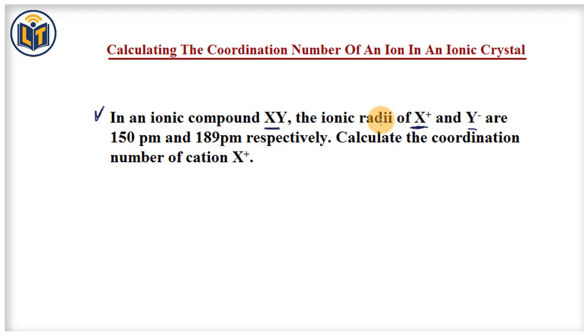Here you can see that ionic radii of both ions are given: 150 pm and 189 pm. From this information we can find out the radius ratio, that is the important part in finding the coordination number of a cation.